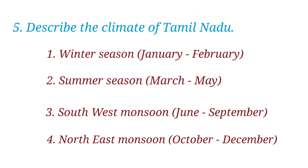And the fifth question is: describe the climate of Tamil Nadu. Tamil Nadu's climate has four seasons — Winter season: January to February; Summer season: March to May; South West Monsoon: June to September; North East Monsoon: October to December.